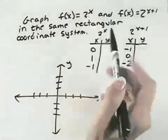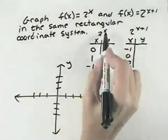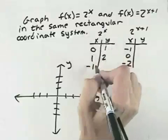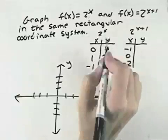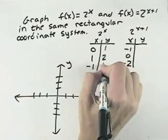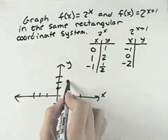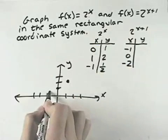We've got f(x) equals 2 to the x. When x is 0, 2 to the 0 is 1. When x is 1, 2 to the 1st is 2. When x is negative 1, 2 to the negative 1st power is 1 over 2. So we have x is 0, y is 1; x is 1, y is 2; and x is negative 1, y is 1 half.